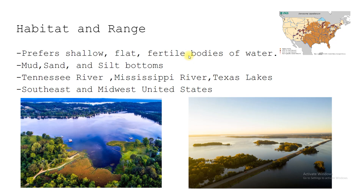Specific examples include Lake Fork, Sam Rayburn, the Tennessee River, and the Mississippi River — places where they don't have steep shorelines. Those flat places, you don't see any big bluffs going into the water. It's part of these real shallow, fertile lakes.